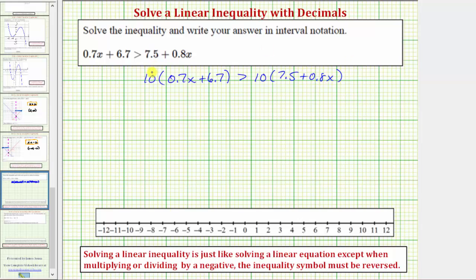So now we'll distribute. When multiplying by ten, the shortcut is to move the decimal point to the right one place value. So ten times 0.7x or ten times 7 tenths x equals 7x plus ten times 6.7 or ten times 6 and 7 tenths equals 67 greater than ten times 7.5 or ten times 7 and 5 tenths equals 75 plus ten times 0.8x or ten times 8 tenths x equals 8x.